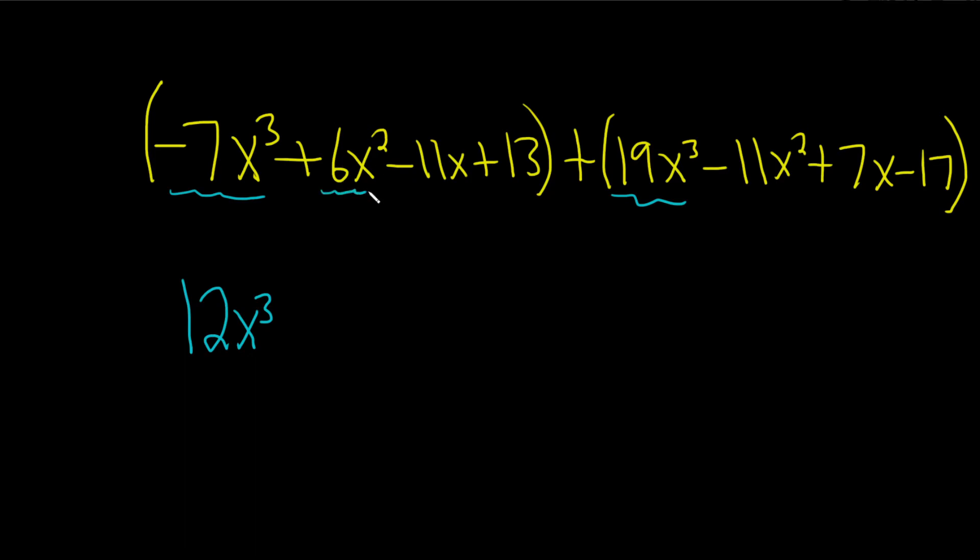Let's go to the next one. 6x squared minus 11x squared. Well, 6 minus 11 is minus 5, so we have minus 5x squared.